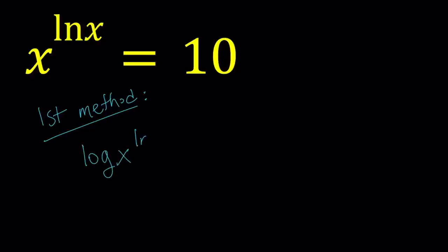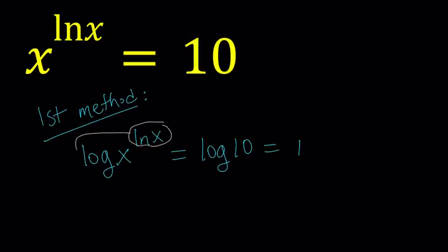I could also ln both sides, because we have ln x in the exponent, but since we have a 10 on the right-hand side, I wanted to start off with logging both sides. Log, by the way, is base 10. I don't write it, but it's base 10. Log 10 with base 10 is equal to 1. Using properties of logarithms, we can move this to the front, and that's going to give us: ln x times log x equals 1.